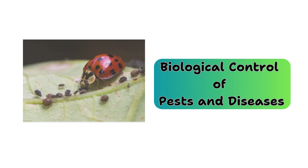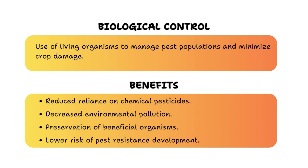Just before we get into the first pest of this series, which is Tuta absoluta, it's very important for us to understand some terms on biological control and also understand how it works. Biological control is a method of managing pests and diseases using other living organisms. We can use predators, parasites, or pathogens to suppress or reduce the populations of the target organisms.